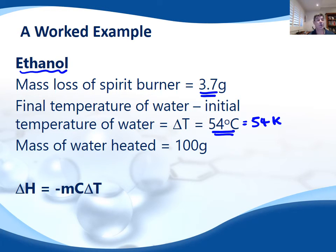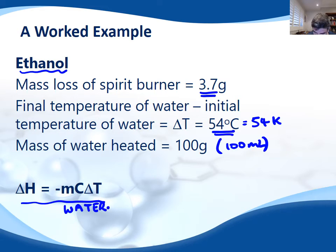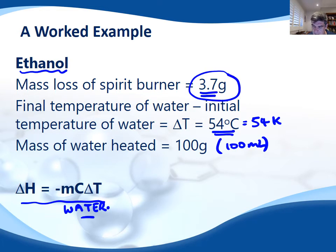The mass of water heated was 100 grams — so we can assume that was 100 mL, but it's already converted to grams, which is what we want. Now we have to plug our values into our equation. Remember, this is about water, so our delta H value must be about the mass of the water, the specific heat of the water, and the change in temperature of the water. The mass of fuel value is going to have to wait for a little while before we actually use it.